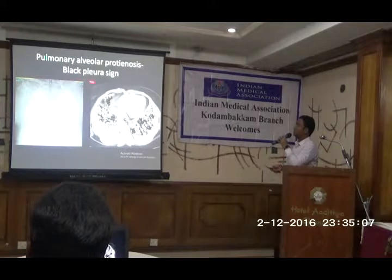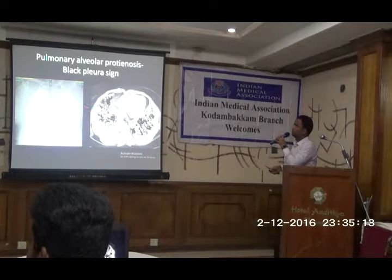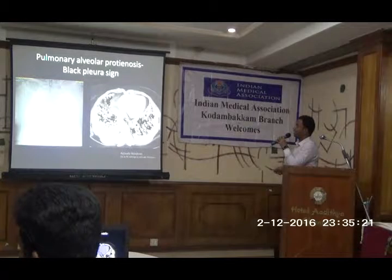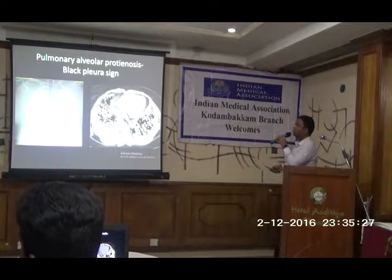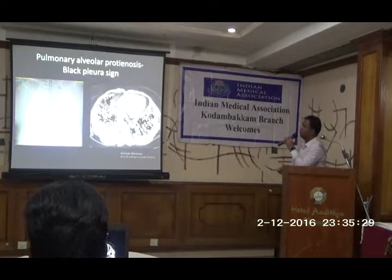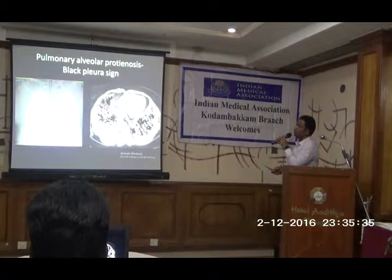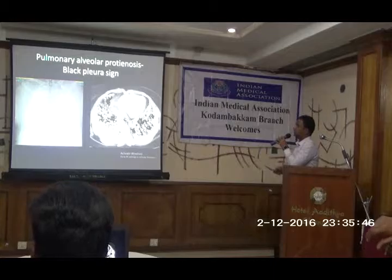This is called the black pleura sign, seen in pulmonary alveolar proteinosis. The pleura appears relatively black compared to the affected pulmonary parenchyma — better seen on CT. In pulmonary alveolar proteinosis, there are disproportionate radiological findings compared to the patient's clinical status — the patient may be relatively better but you will have a lot of radiological findings. If watching closely, you can expect a small black lucency called the black pleura sign.